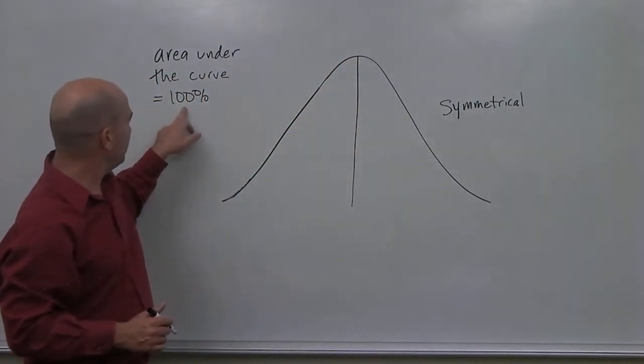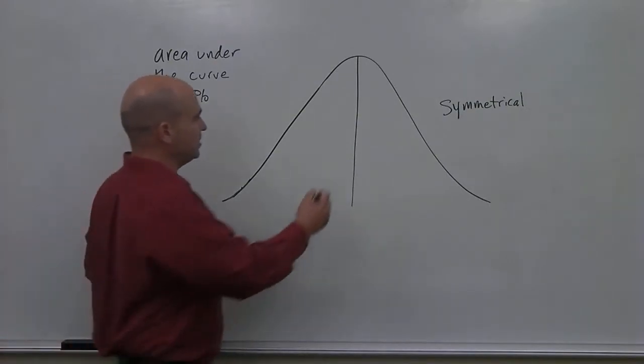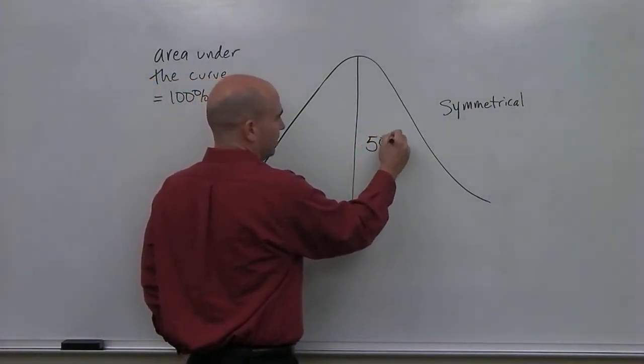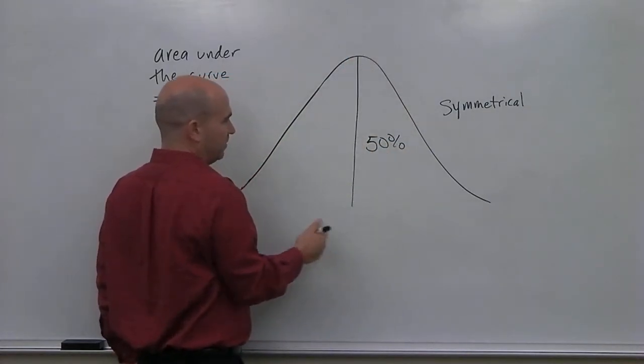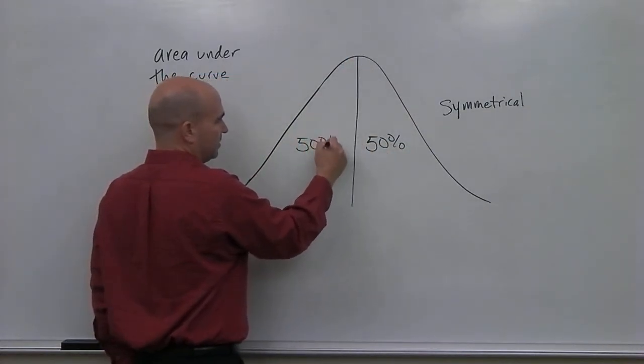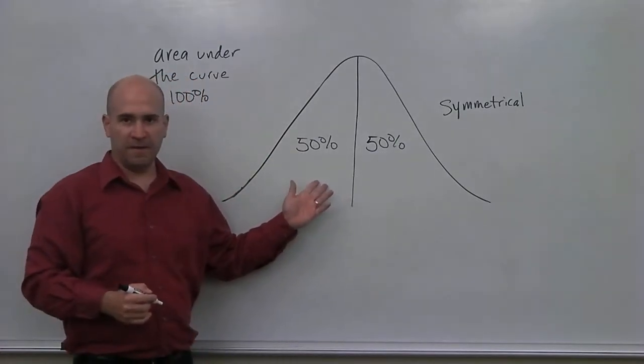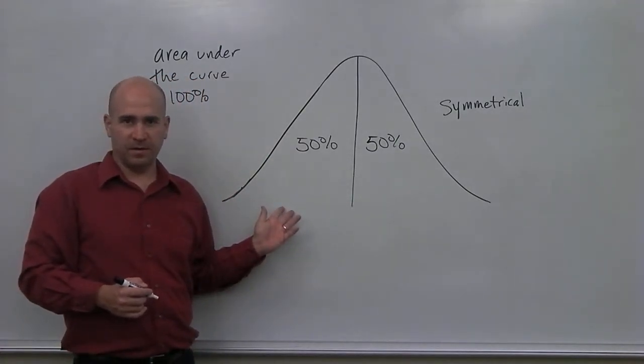Well, if I have 100% total, then I should have 50% of the value should fall on this side of the center, and 50% of the value should fall on this side of the center.